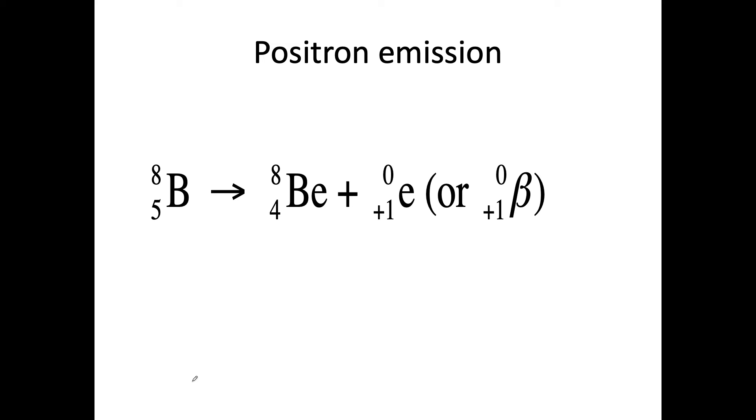Next we're going to look at positron emission. We're going to look at our boron becomes beryllium. So we have boron-8. We have mass is 8 on the left. Proton is 5 on the left. Up here, 8 plus 0 is 8. 4 plus 1 is 5. And so everything's balanced.